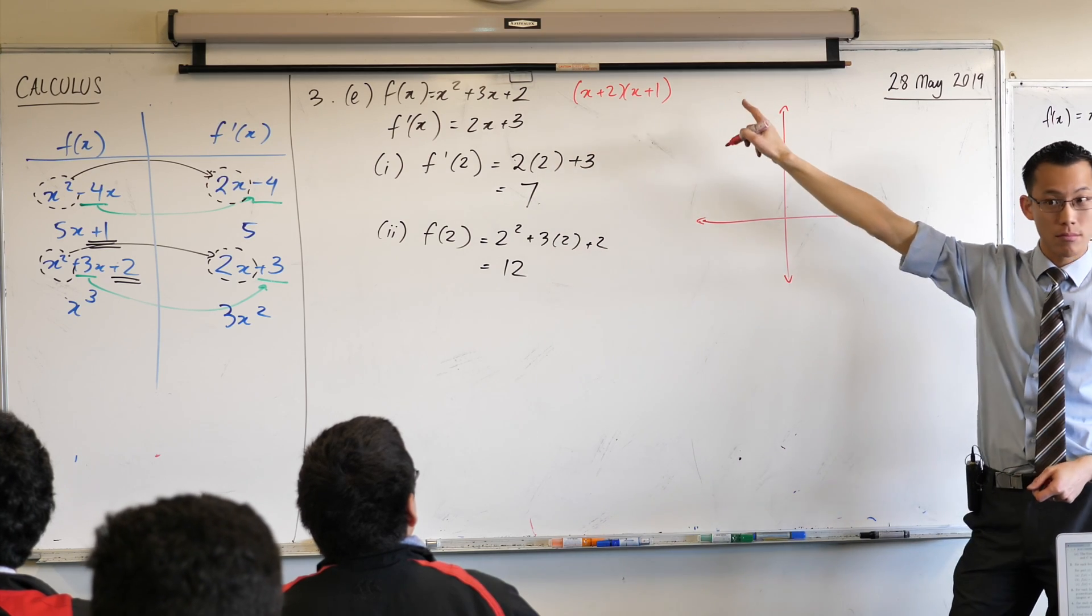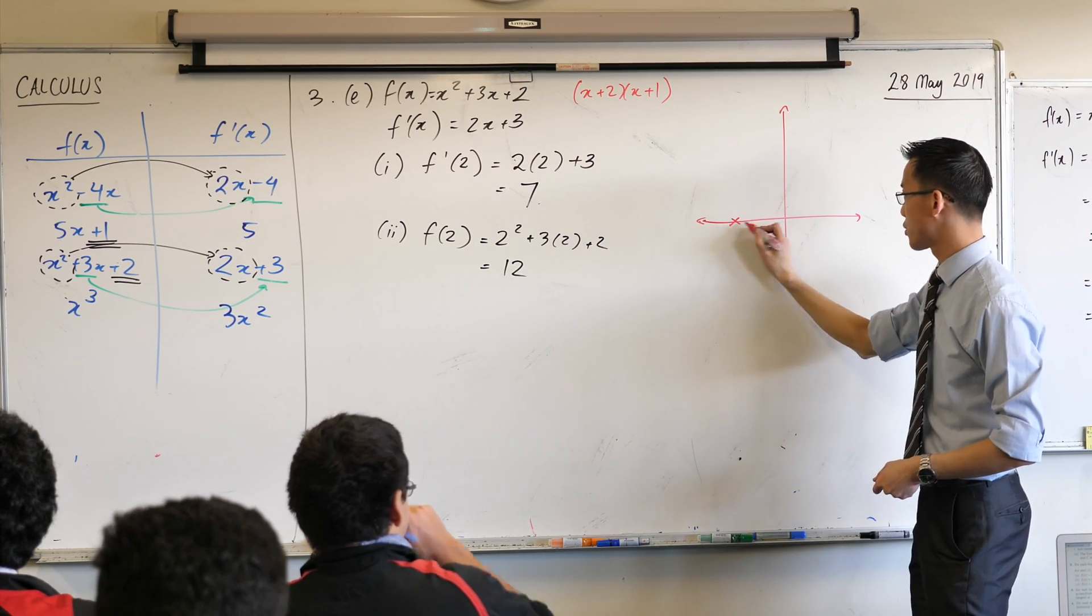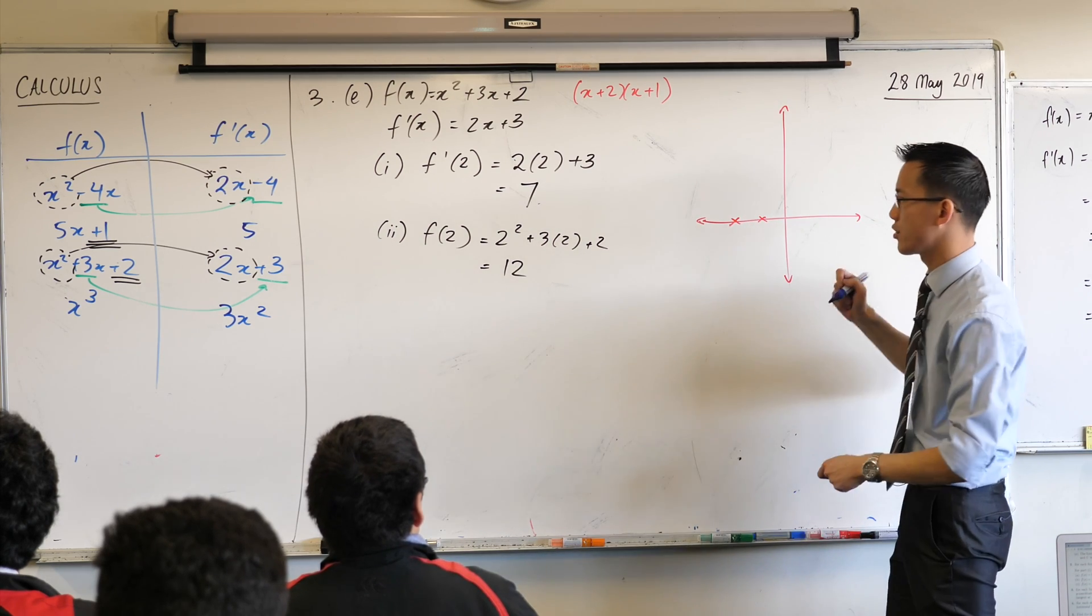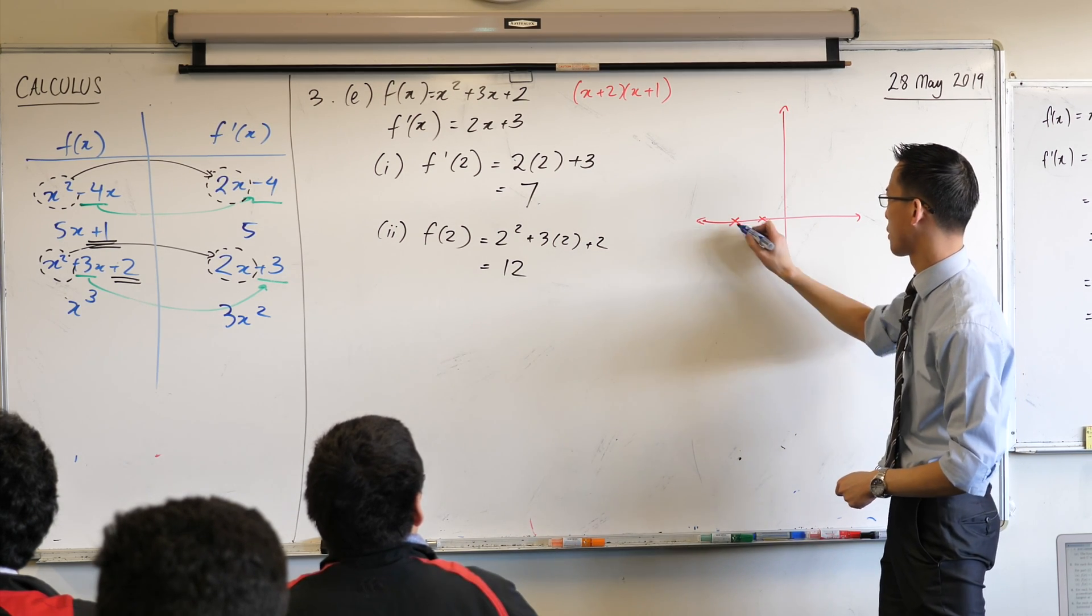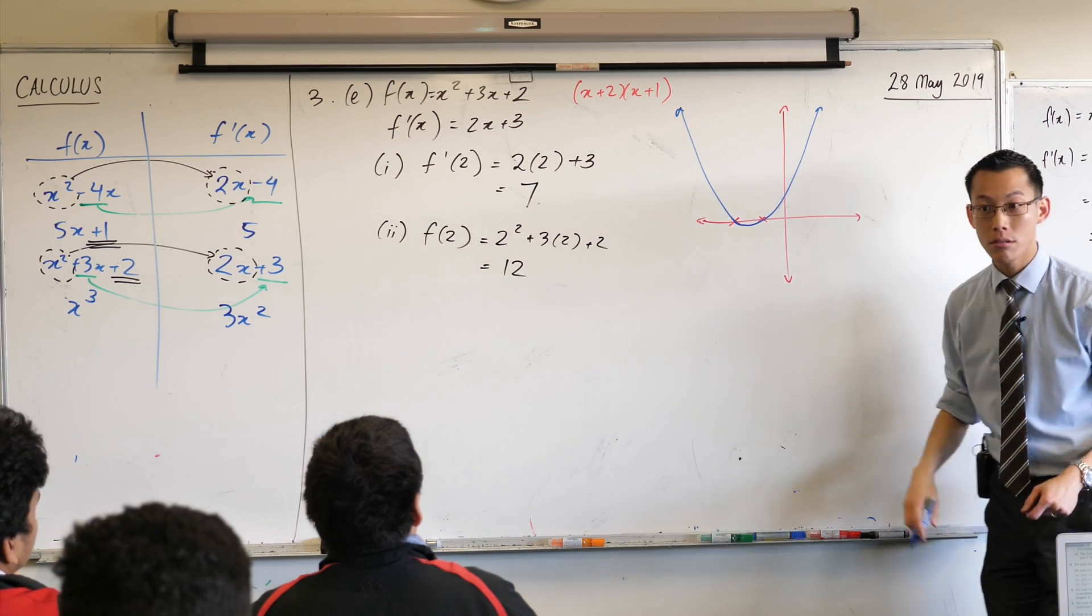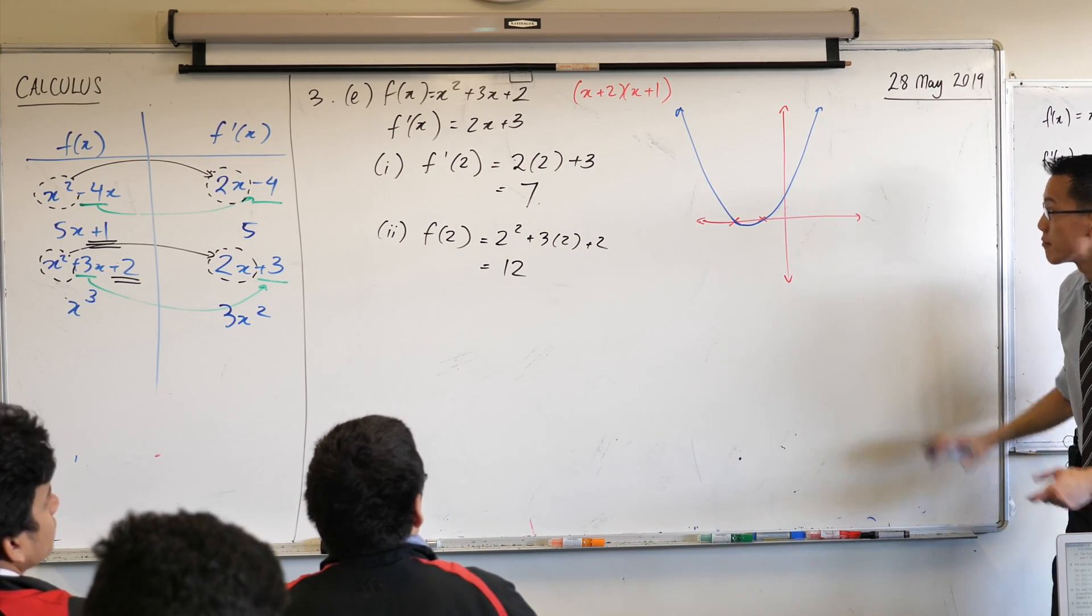So, x-intercepts? Minus 2 and minus 1. Minus 2 and minus 1. I'm going to go through there. And we actually saw this before, didn't we? We actually had a look. I'm just looking if I'm going to have enough space. Y-intercept is 2. Like so? Is that okay? I'm trying to make sure my scale is okay.